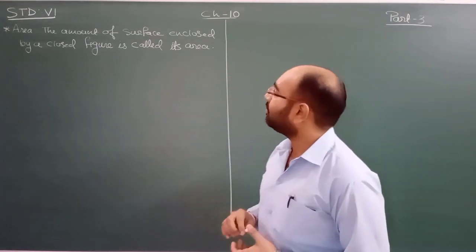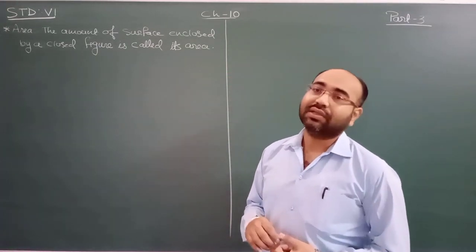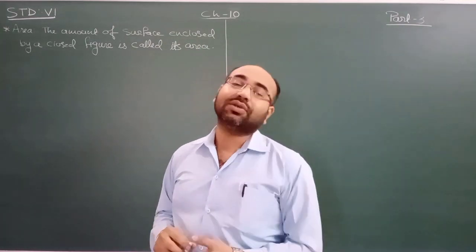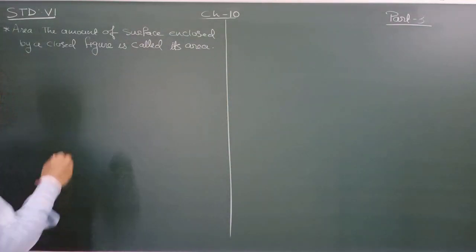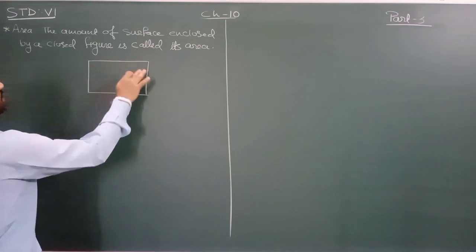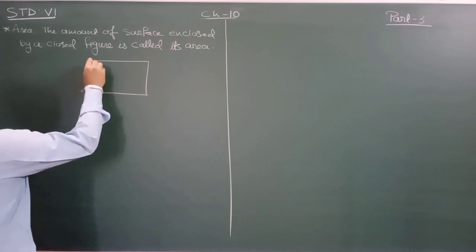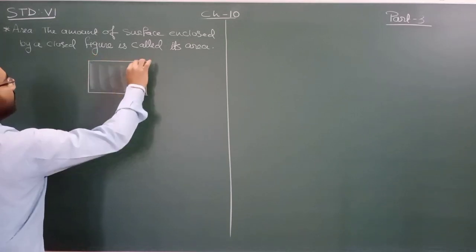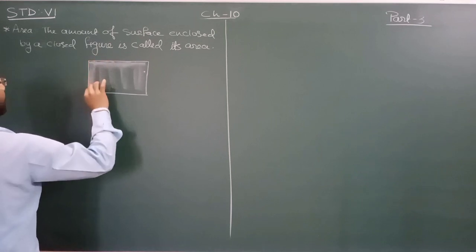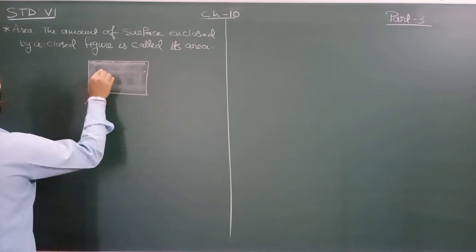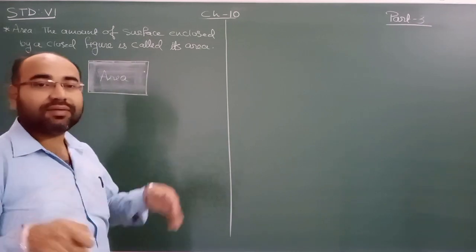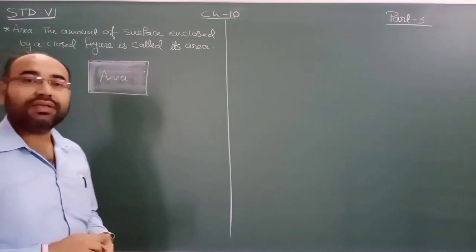Area means the amount of surface enclosed by a closed figure is called its area. If I draw a rectangle, whatever surface is covered by this rectangle will be called its area — this whole part is considered the area of the figure. Suppose a person occupies some space; that space occupied will be called its area.